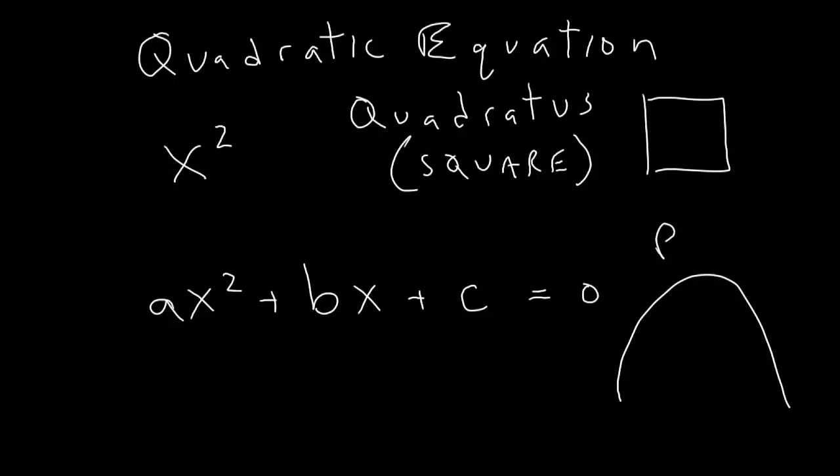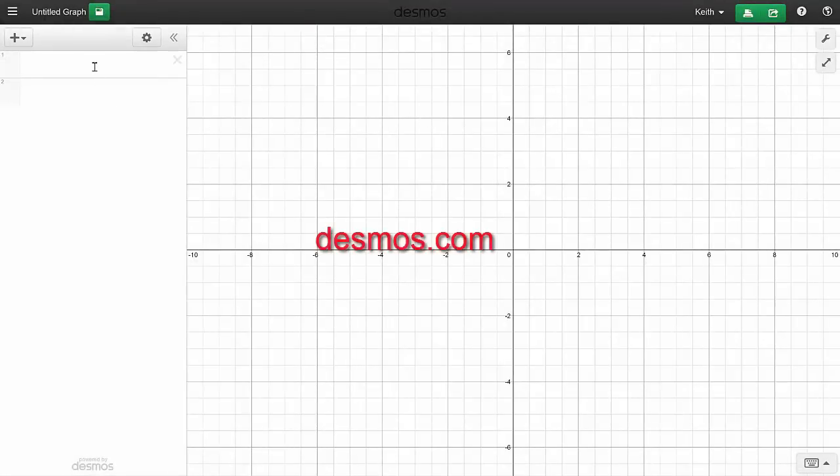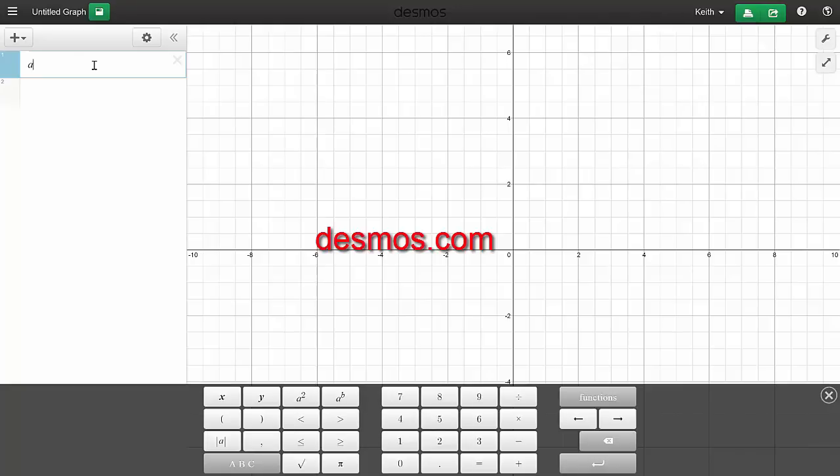Now, when you graph a quadratic equation, you get a parabola. The size, shape, and position of the parabola will depend on the variables a, b, and c. Here, I'm using a free online graphing calculator at desmos.com to show the formula in action.